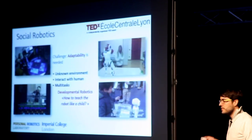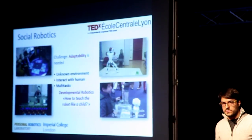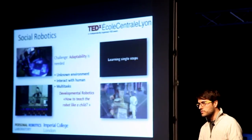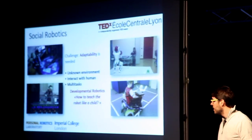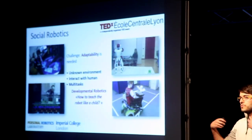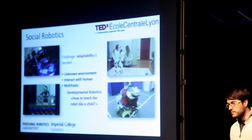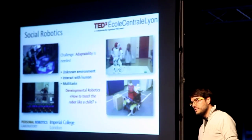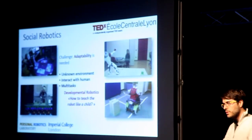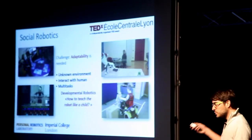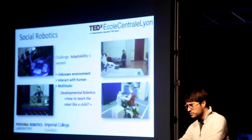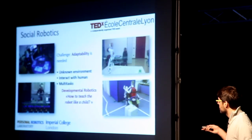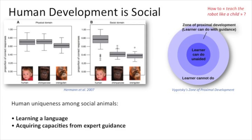How do we deal with that? We are taking a paradigm called developmental robotics, where the idea is not to provide a robot that knows everything. The idea is to provide a robot that can learn everything — a little bit like a child. You provide a robot, and if you need it to do something, you just show it, you demonstrate it. That's the key challenge.